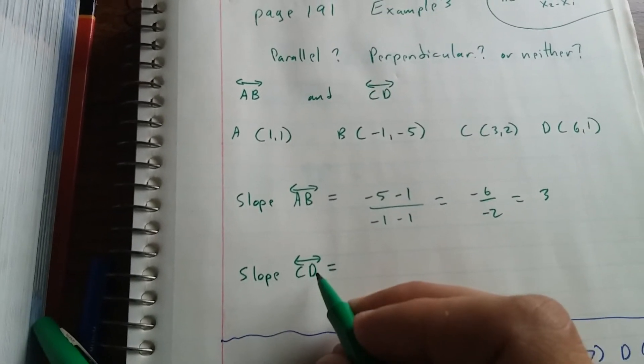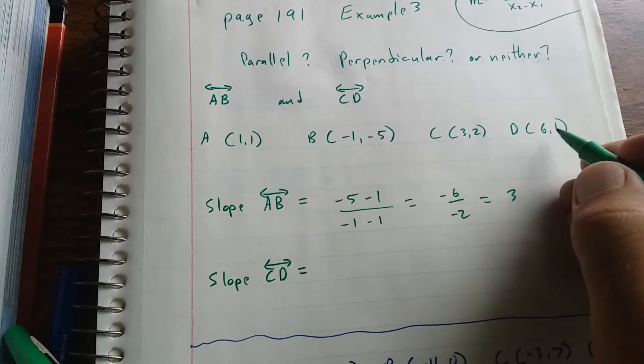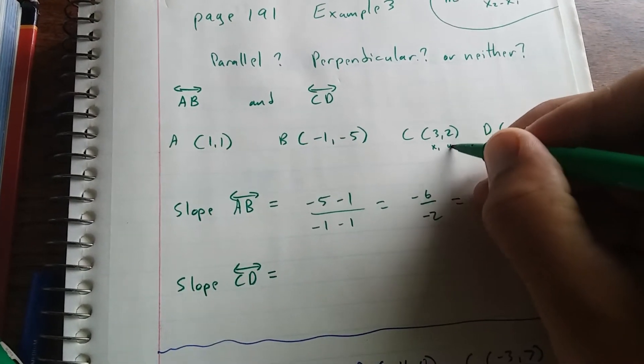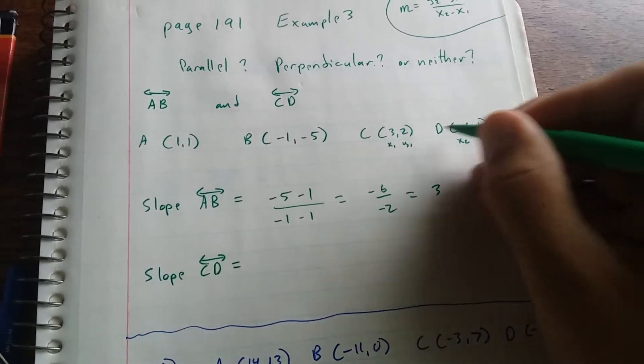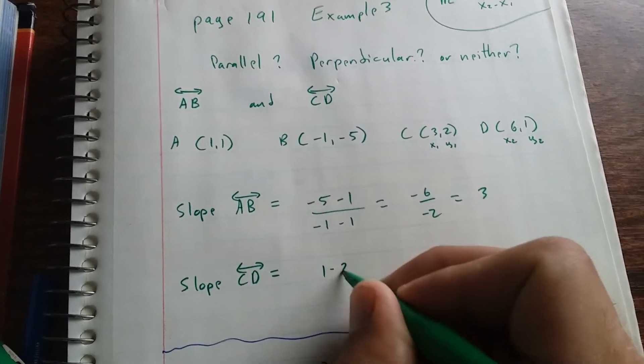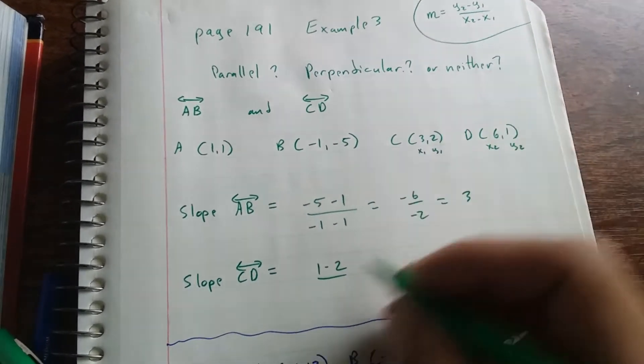You get negative 6 over negative 2. That reduces to 3. And then your slope of CD right here. So this is now going to be X1, Y1, X2, Y2. You're going to do 1 minus 2,